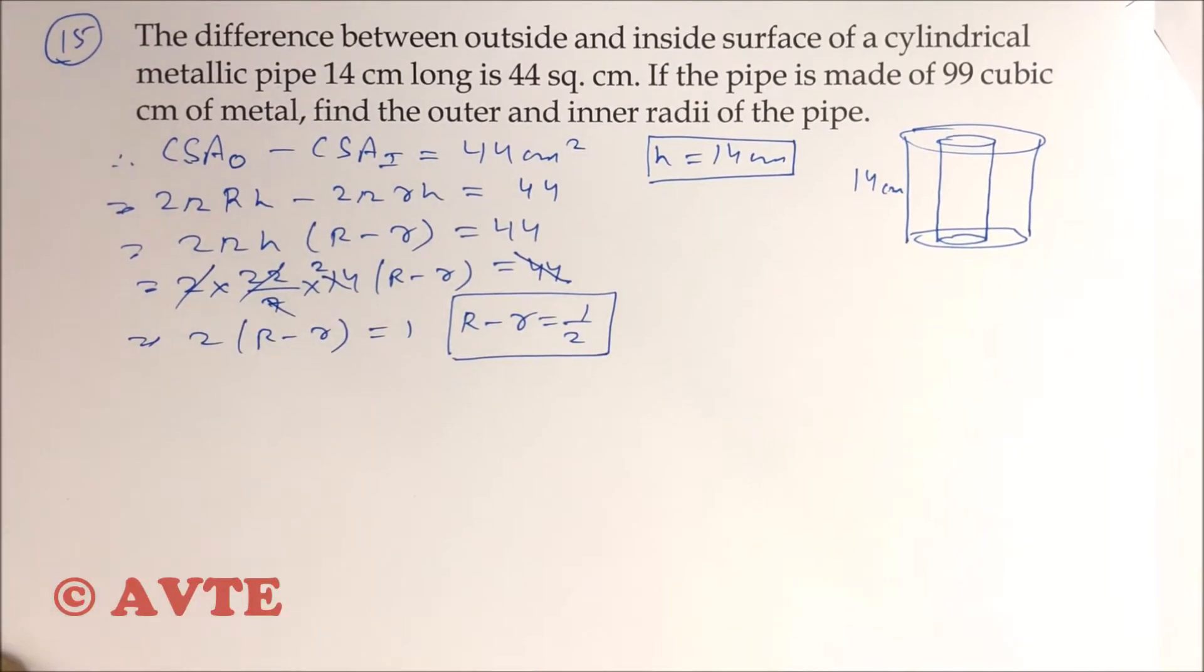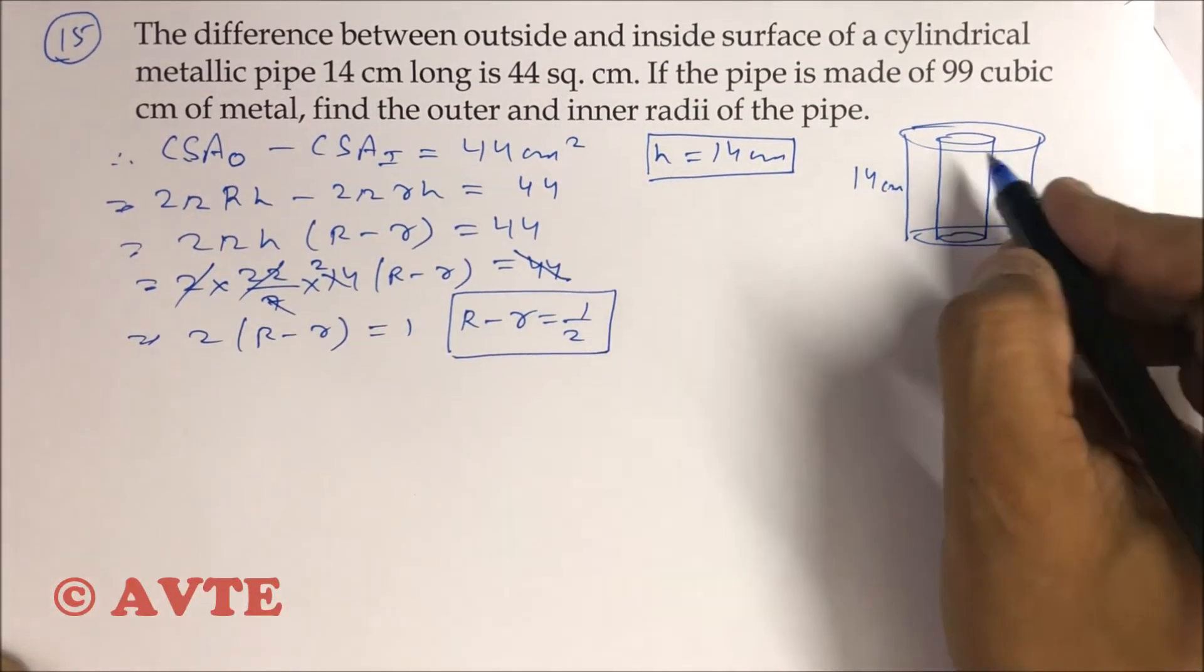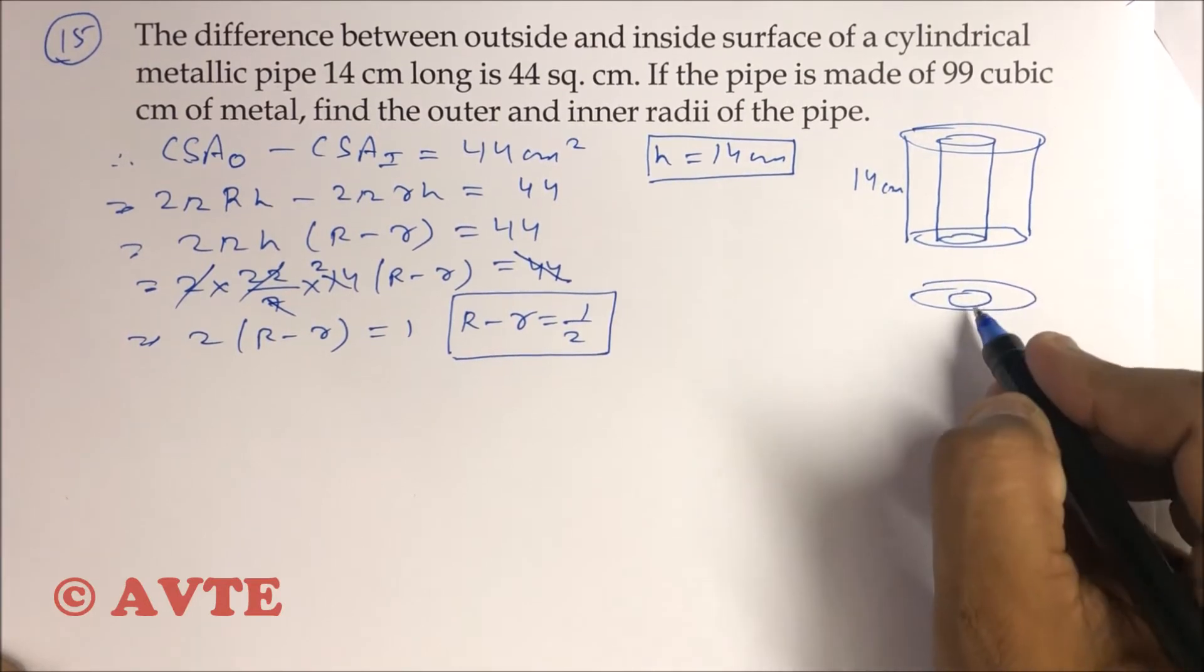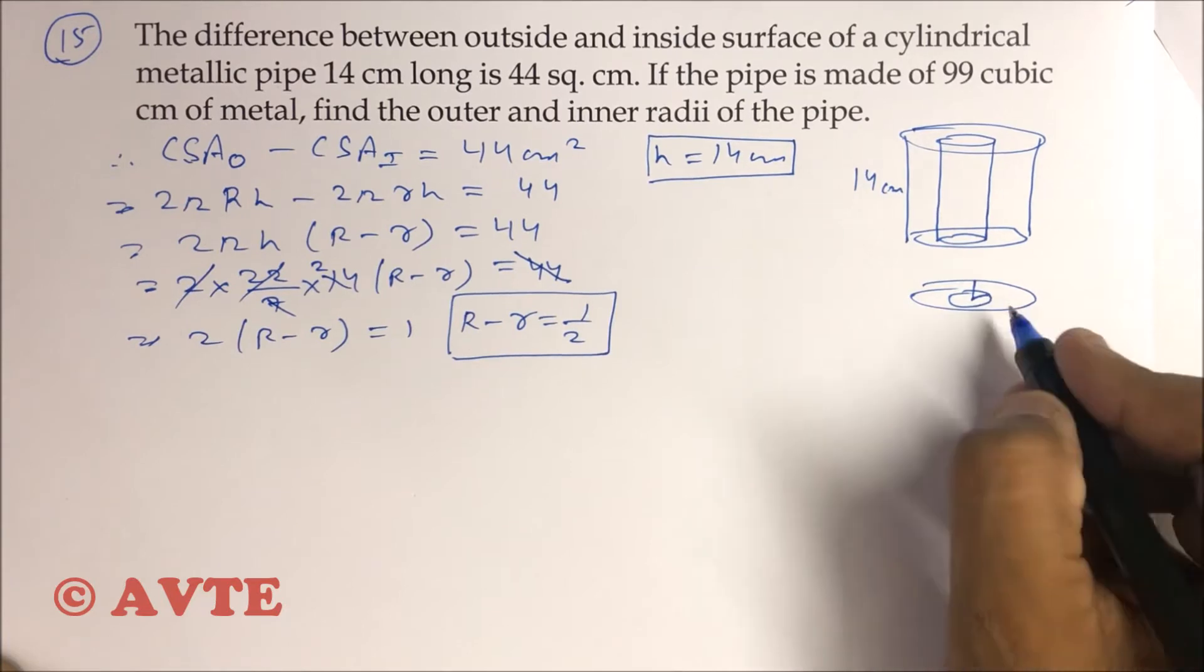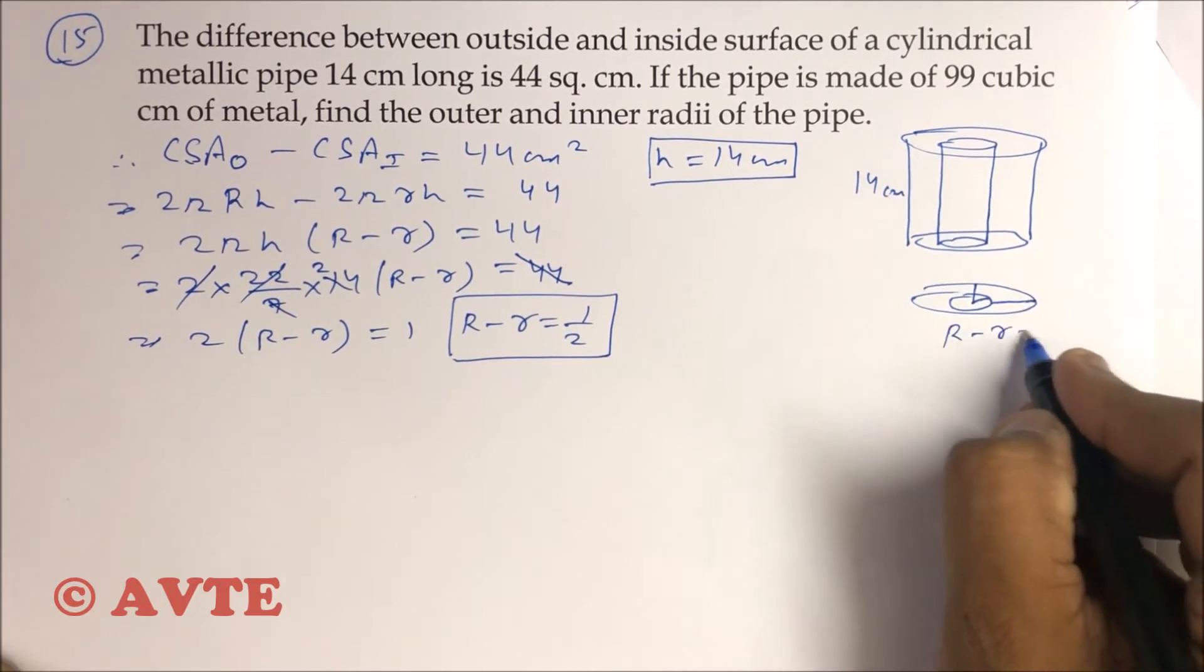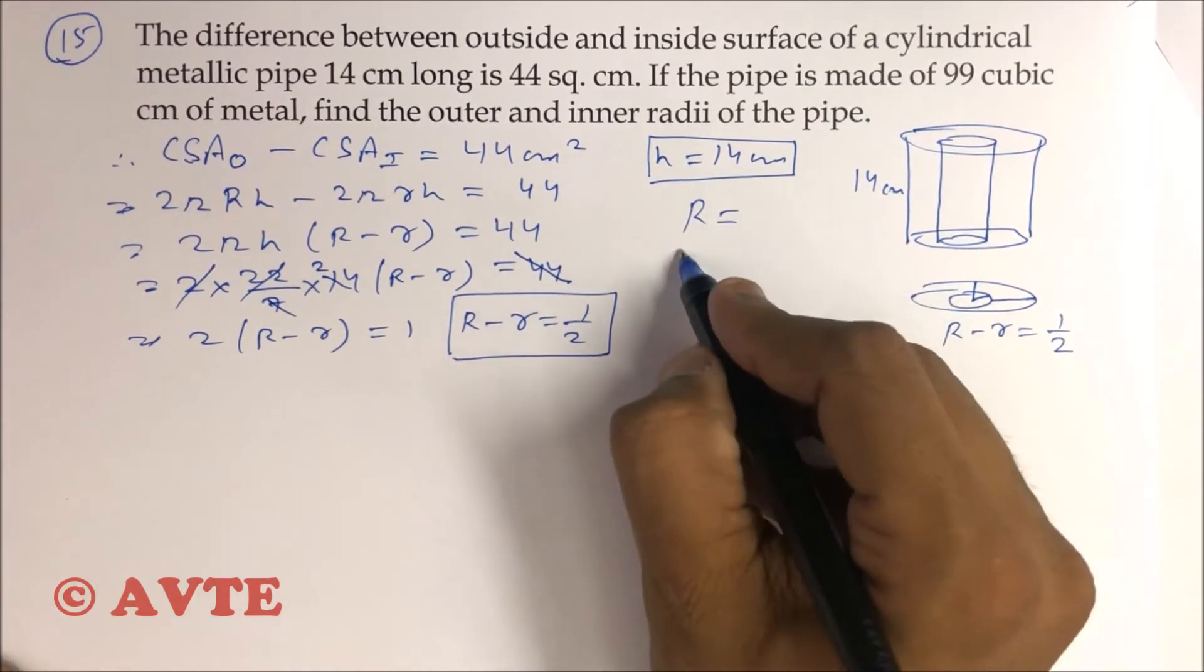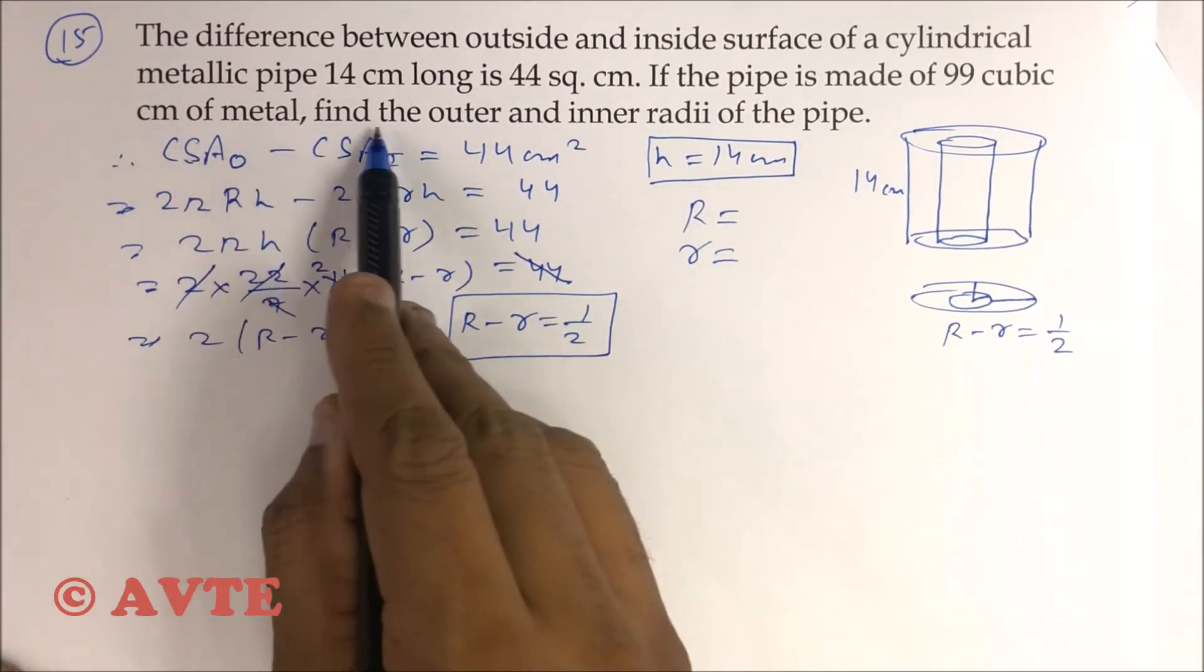This means if this is your circle, this is your inside small r and this is outside R, then R minus r is 1/2, which is the thickness. You have to find the outer radius and inner radius according to the given question.